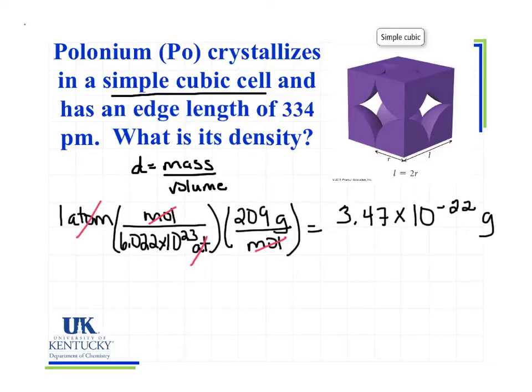Now I've got my mass. Now I need to find the volume. Now we're given an edge length of 334 picometers. Now typically densities are given for solids in grams per centimeter cubed. So before I convert this to or find the volume from this, I'm going to convert it to centimeters.